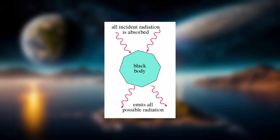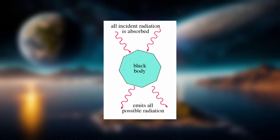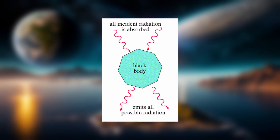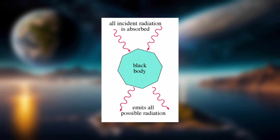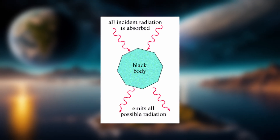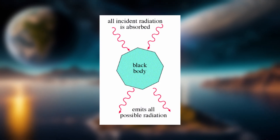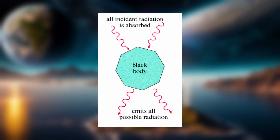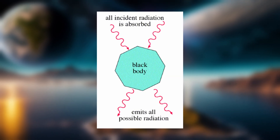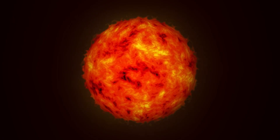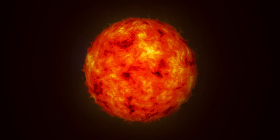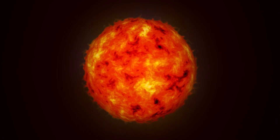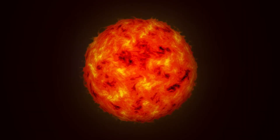A black body is essentially any object that perfectly absorbs and perfectly emits energy. There is no light reflection taking place. If light is shot at it, it will be completely absorbed, and if light is seen coming from it, its source is from that object. A great example of a black body is the sun. The sun completely absorbs all light that hits it, and all light that comes from the sun is emitted from it, not reflected.